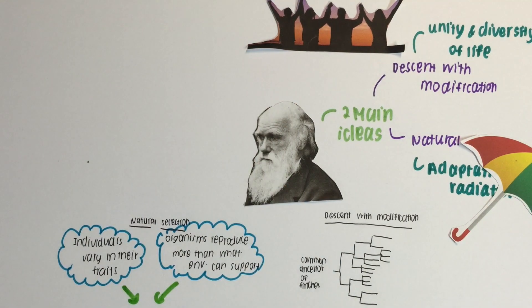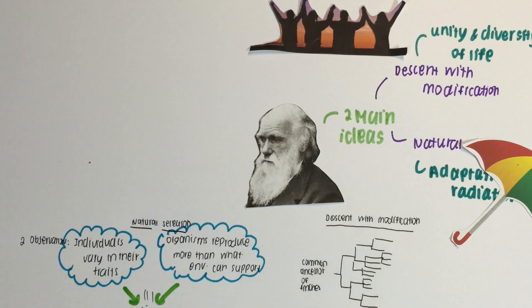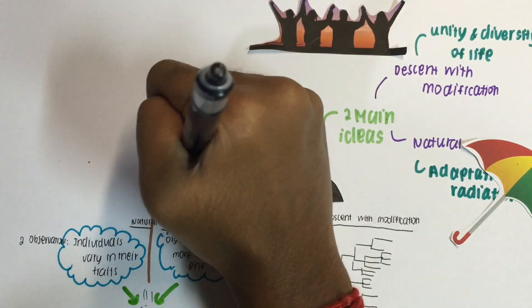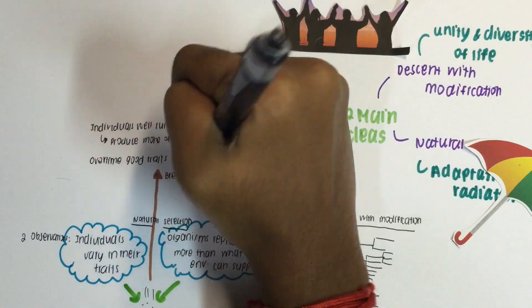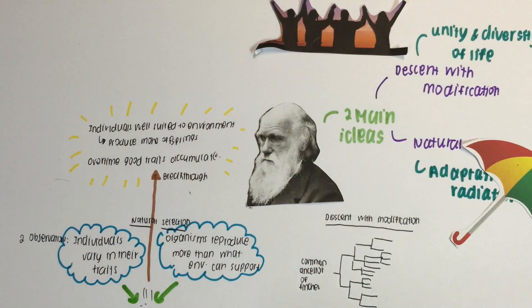Organisms that are more suited to the environment, which have more favorable traits, are more comfortable and more used to the environment itself. So they produce more offspring and pass down their favorable traits to their offspring as well.